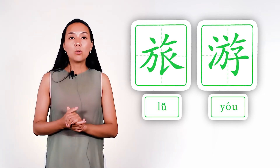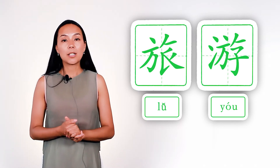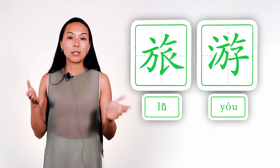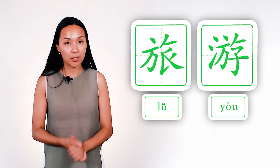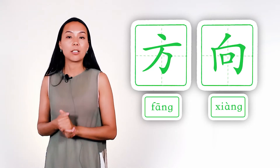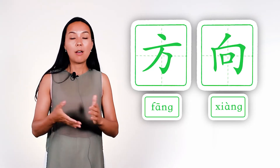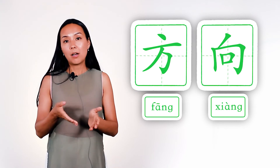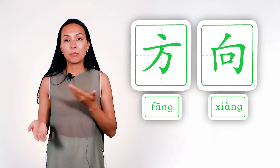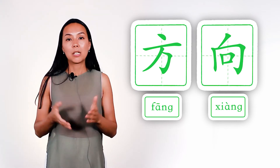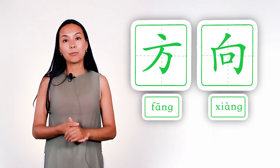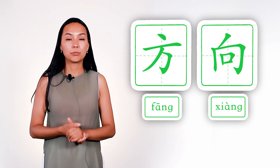Now, let's study examples in which our radical is used as a separate word. The first example is 'direction' — fang-siang. Fang means square or side, siang means direction, and together: direction.